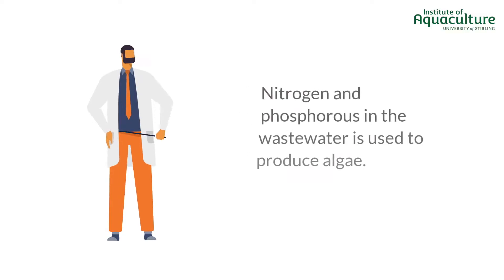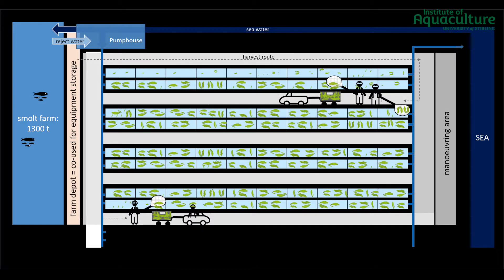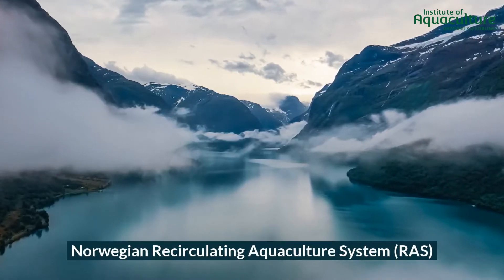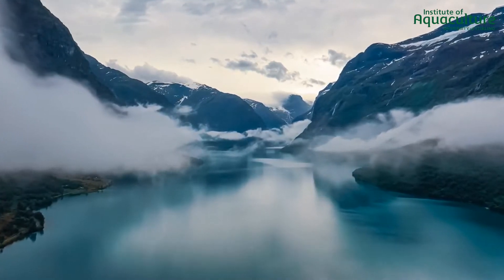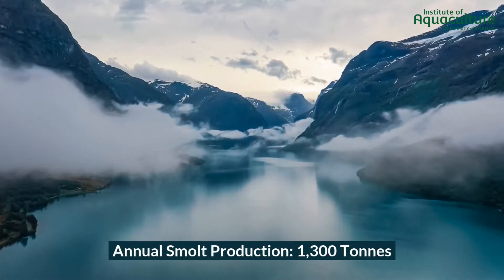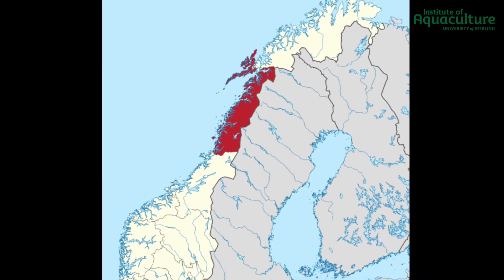In this type of system, the nutrients in the wastewater are used by the algae for growth. The GAME project piloted a theoretical open, decoupled aquaponics system that would produce algae from smolt wastewater. They chose a Norwegian Circulating Aquaculture System producing 1,300 tonnes of smolt per year, located in the region of Nordland, as a representative case for this sector.